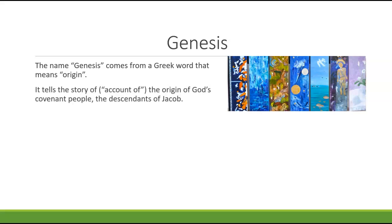It tells the account of the origin of God's covenant people — the descendants of Jacob. There is a key character in the book of Genesis called Abraham, who has a son named Isaac. Isaac in turn has two sons, and the focus narrows to one of them: Jacob. What comes to be known as the Israelites are descendants of Jacob through Isaac through Abraham.